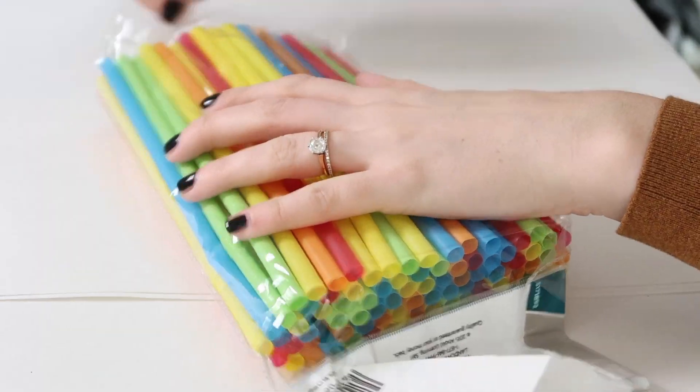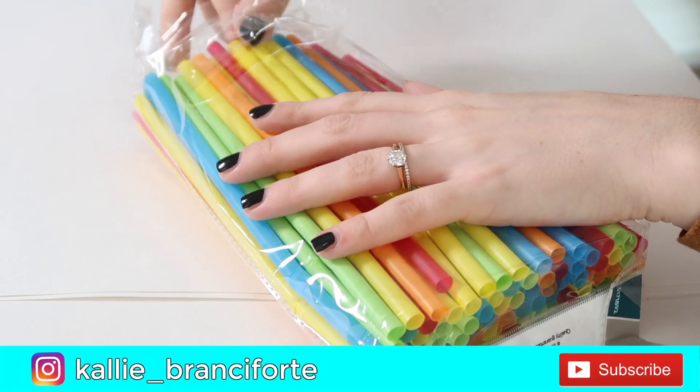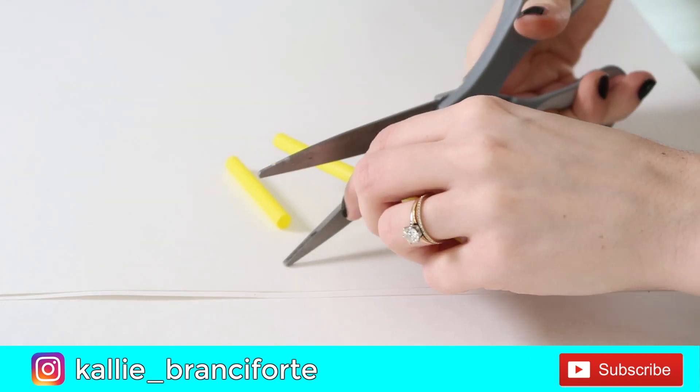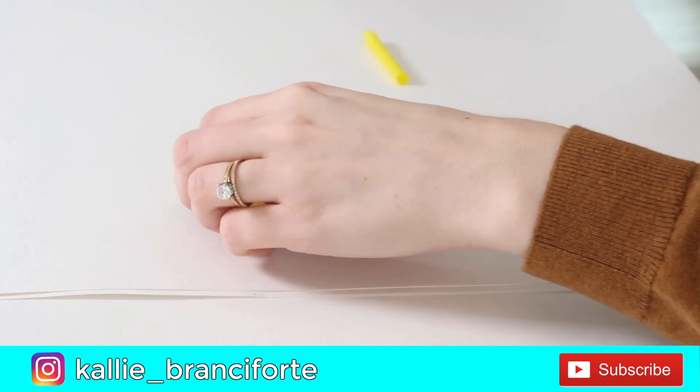Let's move on to some straw hacks for traveling. The first is to make single use packets. So all you need to do is cut the straw into the size that you want. This sort of depends on what you're filling this single use container with.